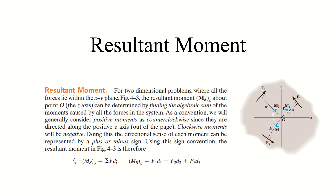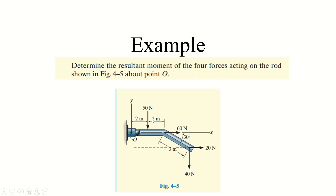We can also find the resultant moment by adding moments due to different forces according to their rotation. For example, if force F1 is turning anticlockwise and F2 is turning about O in the clockwise direction, anticlockwise direction is taken as positive and clockwise direction is taken as negative. We add all these moments to find the resultant moment, so counterclockwise rotation is taken as positive.